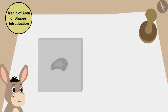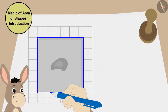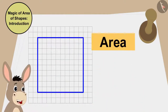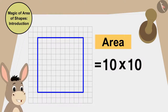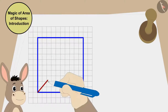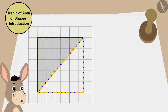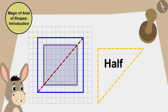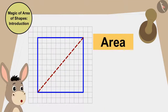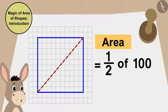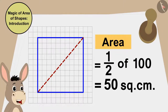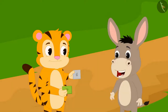Bholla first drew the outline of the cashew barfi on a grid paper. The area of this cashew barfi is 10 times 10, that's 100 square centimetres. If I draw a straight line like this, I will divide this cashew barfi into two equal triangles. Because both triangles are half of this cashew barfi, both areas will be half, or 50 square centimetres. Bholla told Sher Khan.